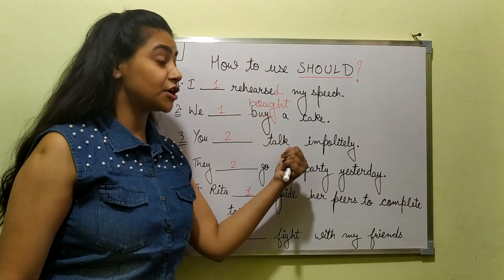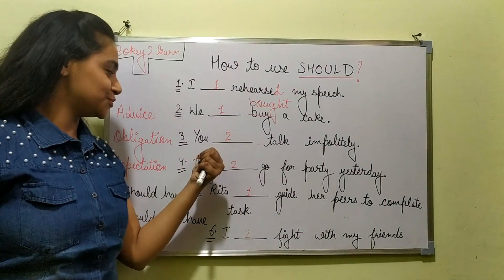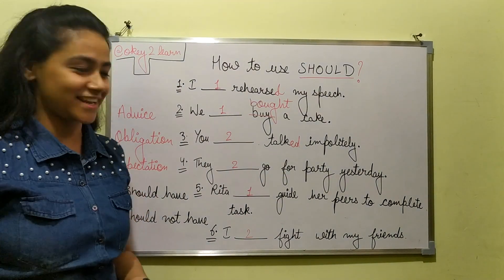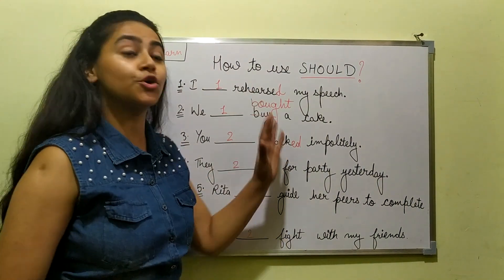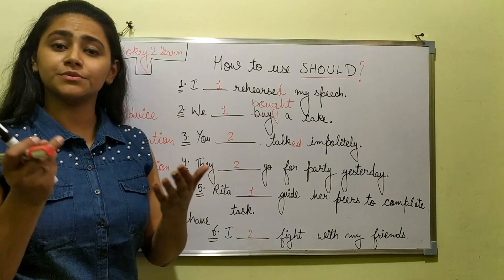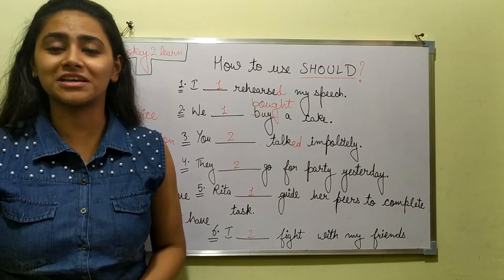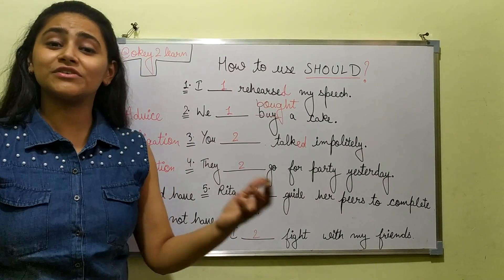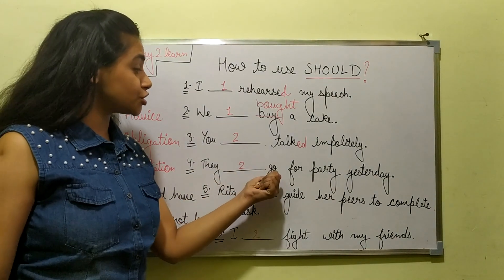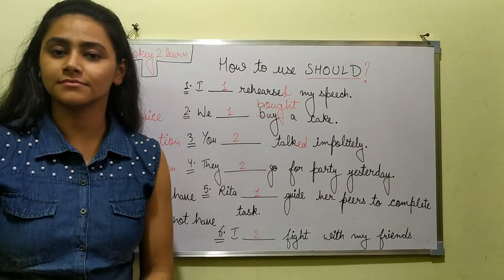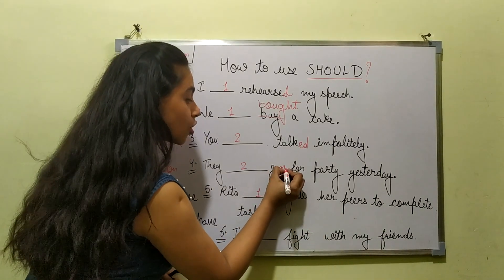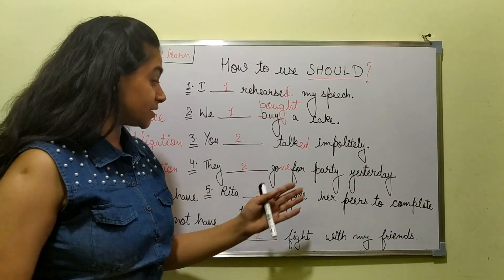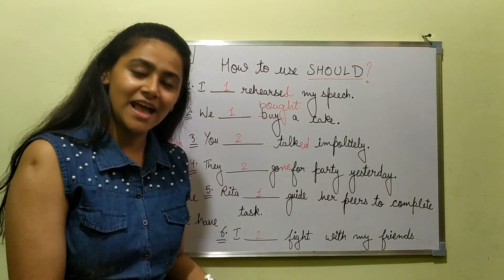Next: 'You should not have talked impolitely' — correct. Moving on: 'They should not go for party yesterday' — incorrect. It should be 'They should not have gone for party yesterday.' The third form of 'go' is 'gone,' that's why we say 'have gone' — correct.